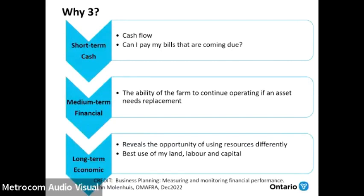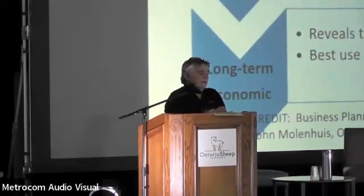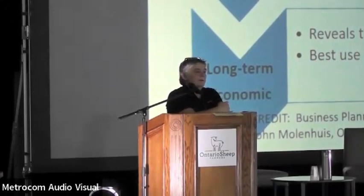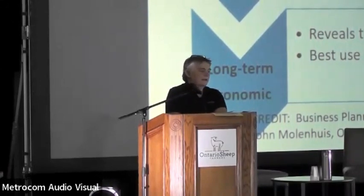Why do we look at cost of production in three segments? The short-term is about paying bills due now. Midterm financials are about the farm's ability to continue operating — replacing equipment, keeping back replacements for the flock, improving fencing. Longer term is about whether we're capturing opportunities to use resources differently — looking at the best use of land, labor, and capital. I just want you to recognize that depending where you are mentally, which of these you want an answer to, you may be disappointed in the rest of the presentation because I may not be answering your specific question.